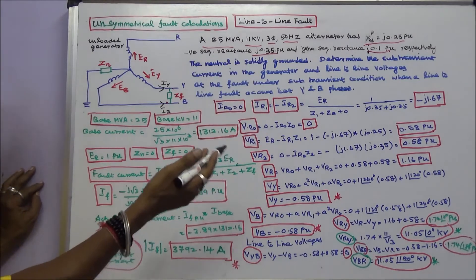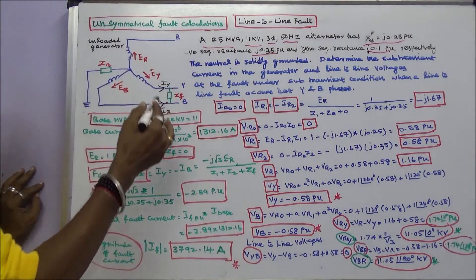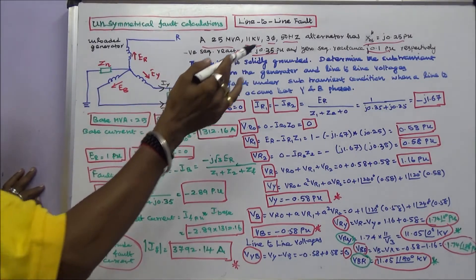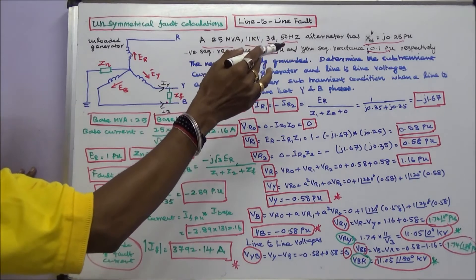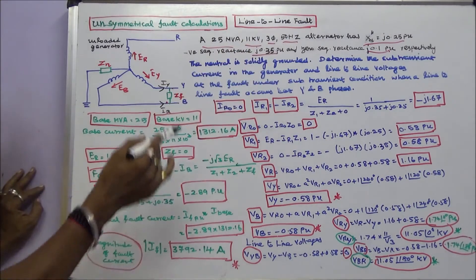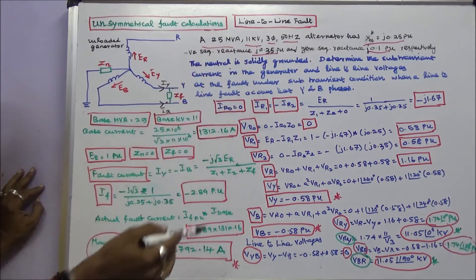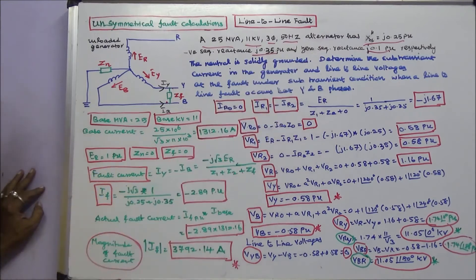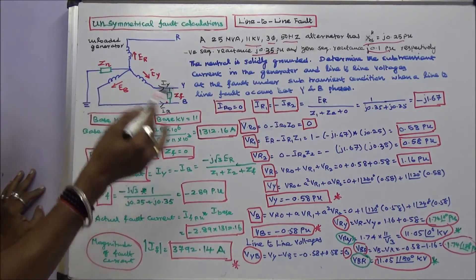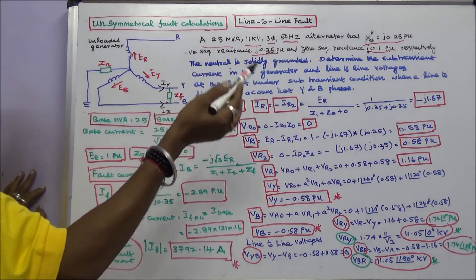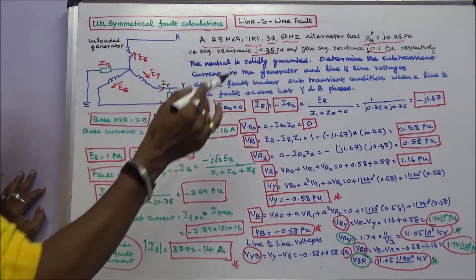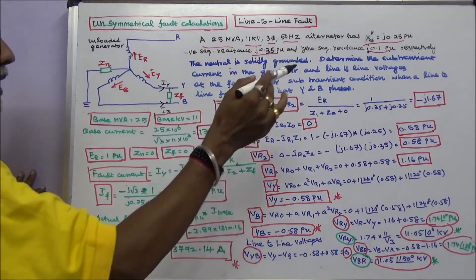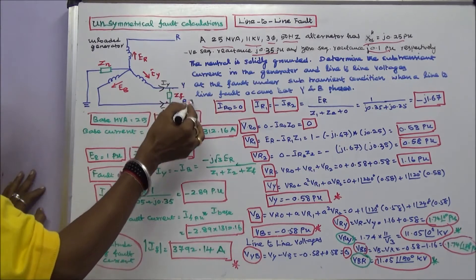This class we work out one problem. A 25 MVA, 11 KV, 3-phase, 50 Hz alternator has subtransient reactance equal to j0.25 per unit, negative sequence reactance equal to j0.35 per unit, and zero sequence reactance equal to j0.1 per unit respectively. The neutral is solidly grounded. Determine the subtransient current in the generator and line-to-line voltages at the fault under subtransient condition when a line-to-line fault occurs between Y and B phases.